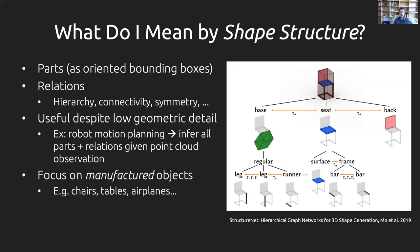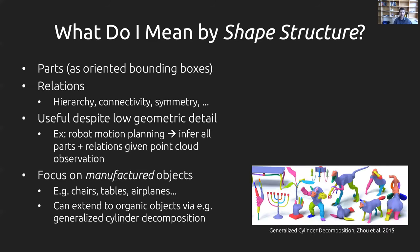I should say this representation isn't limited to just manufactured objects. You could extend it to more organic objects via other kinds of primitive decompositions — like generalized cylinder decomposition, which finds cylinder-like primitive shapes in arbitrary 3D meshes. You could impose relations on these to model organic shapes as well.